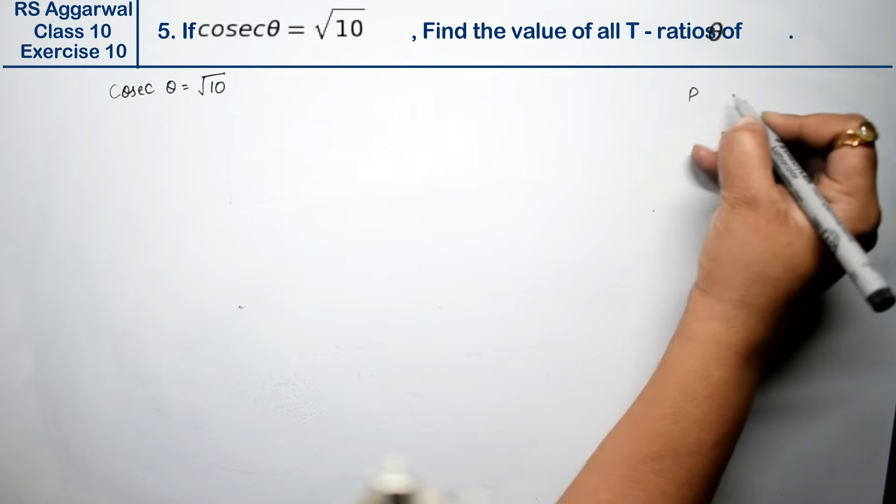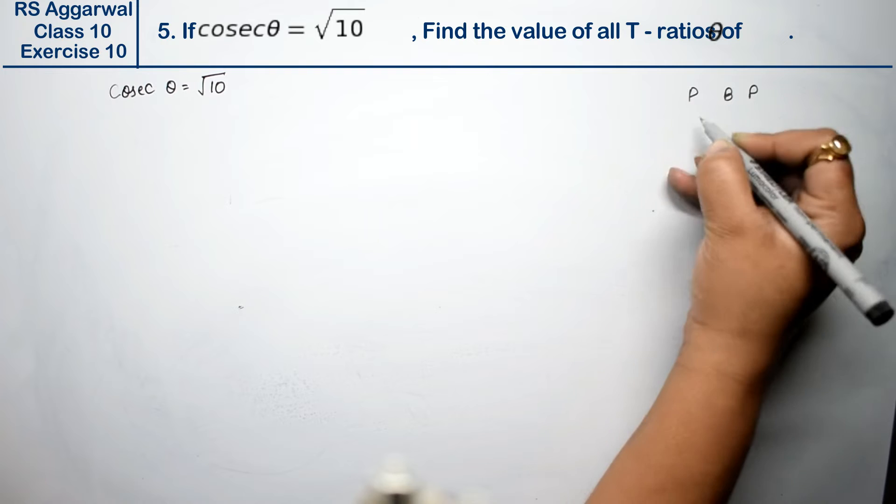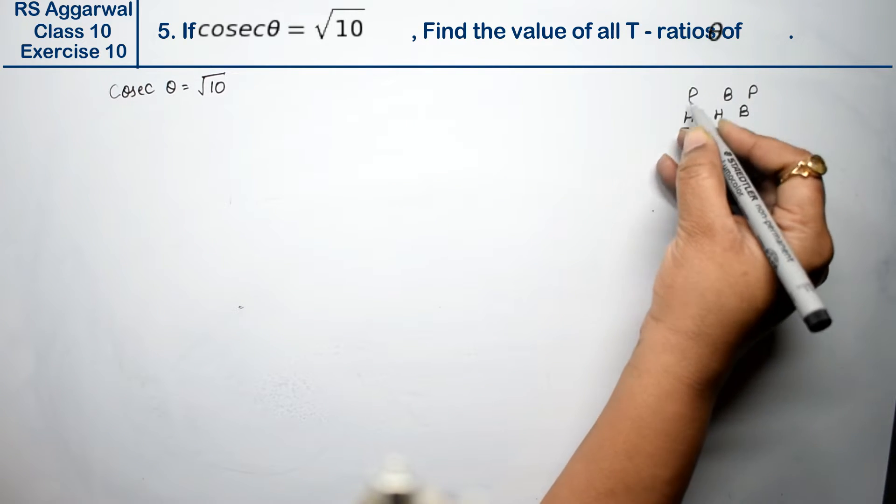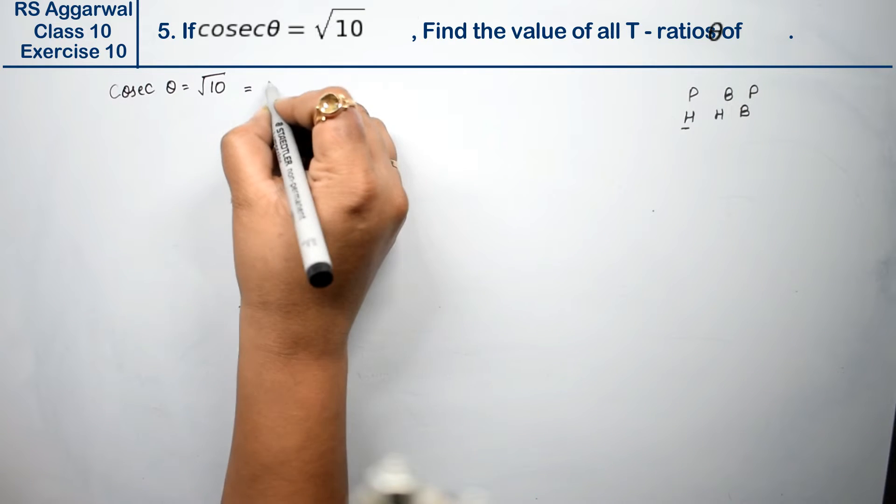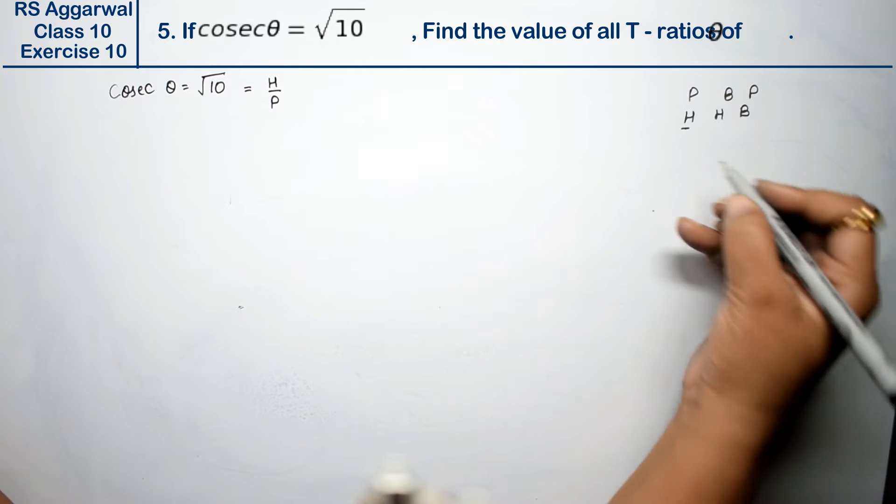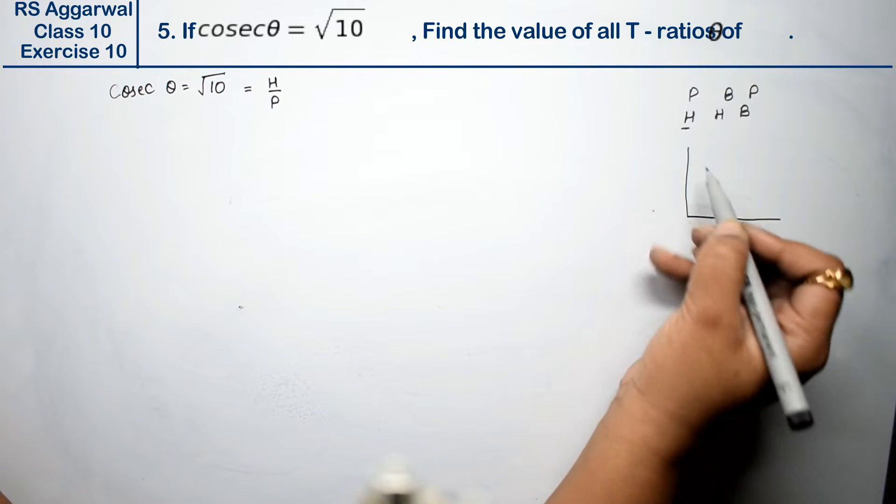What was the formula? Pandit Badri Prasad Har Har Bole. Where was the cosec? H upon P. How is H upon P? When we make a right triangle.